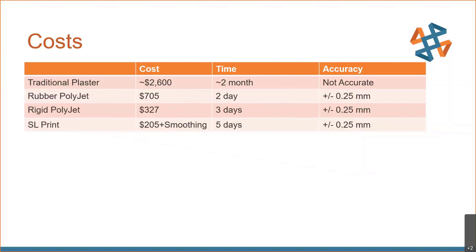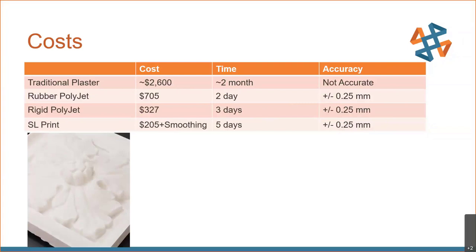Here are some cost estimates for these different methods. For traditional plaster casting, going to a company with no CAD data and asking them to make an 8-inch by 8-inch plaster part, the cost is about $2,500. It'll take them a while, and there's no guarantee on accuracy — you send them pictures, describe the features, and they make one by today's standards. It's definitely a craft, but there's no measurable accuracy guarantee.